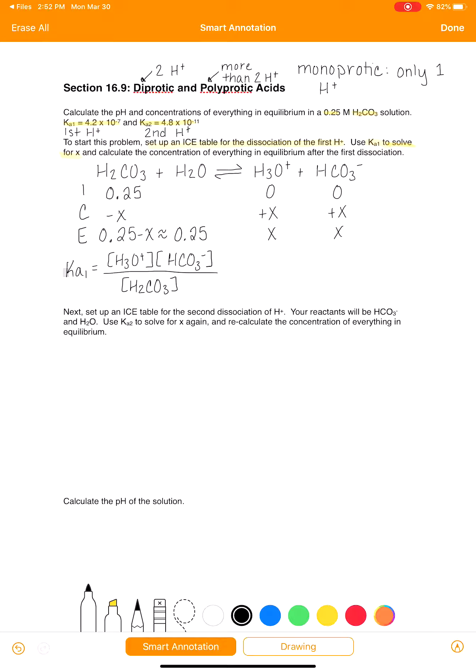Plugging in what we have from this problem, Ka1 is 4.2 times 10 to the minus 7. H3O plus and HCO3 minus are each X, so that's X squared. And H2CO3 is 0.25.